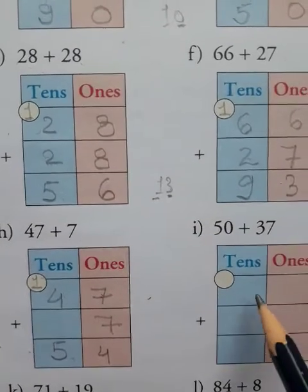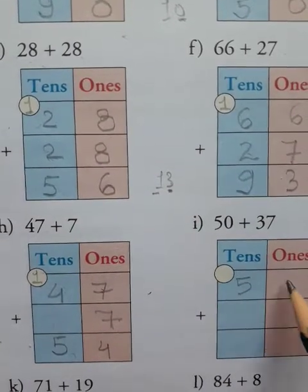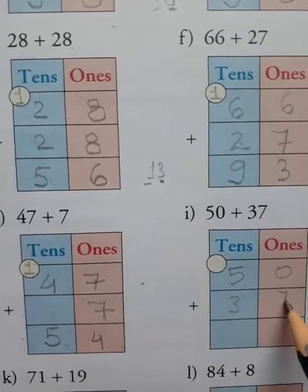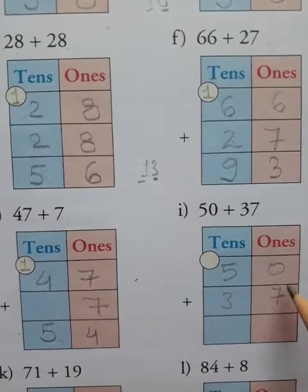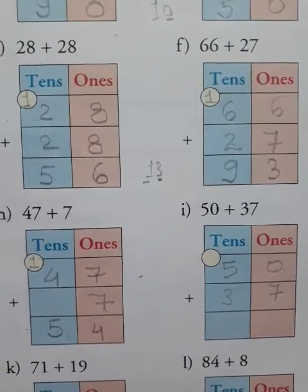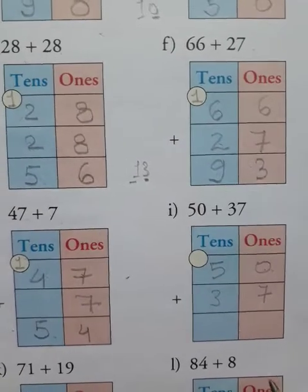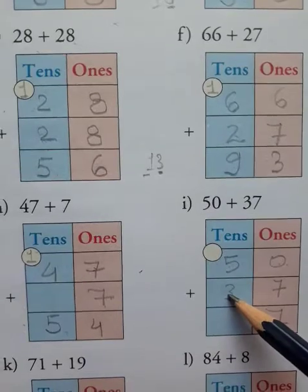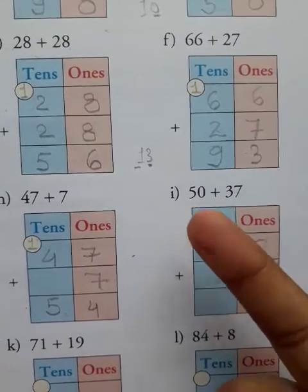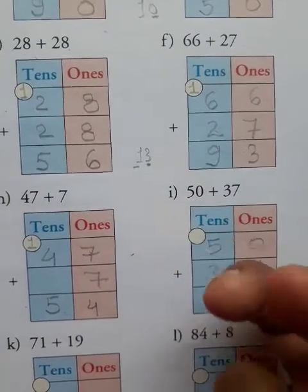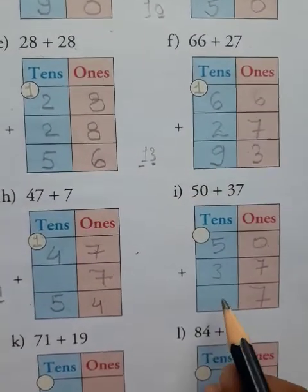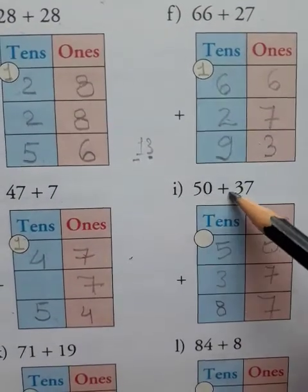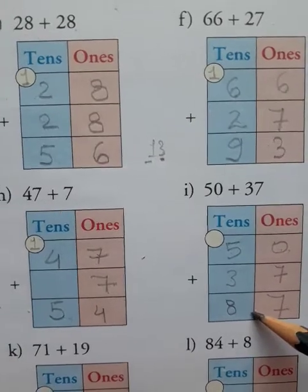Next one is 50 plus 37. You write 7 in the ones place. 5 plus 3 is equal to 8. So you write 8 here. It means 50 plus 37 is equal to 87.